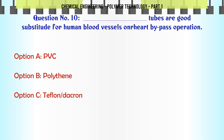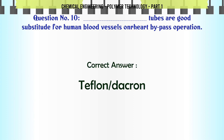Tubes that are good substitutes for human blood vessels in bypass operations are made of: A. PVC, B. Polythene, C. Teflon-Dacron, D. Polystyrene. The correct answer is Teflon-Dacron.